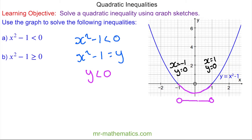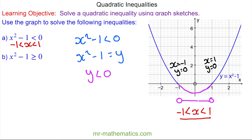We can write this as a solution where x is less than one but x is greater than negative one. This is our solution to this inequality. For question b, we're now looking at our points that are greater than or equal to zero.